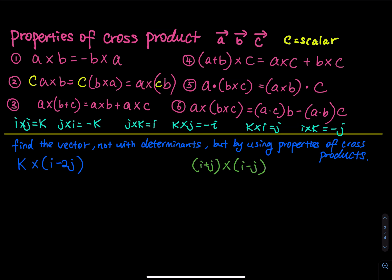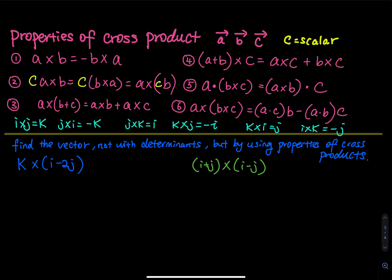Number five: A dot (B cross C) is the same thing as (A cross B) dot C. If you think about this as multiplication, it's pretty easy to absorb. A times B times C is the same as A times B first, then times C. But in vectors you have to use the proper language: A dot (B cross C) equals (A cross B) dot C.